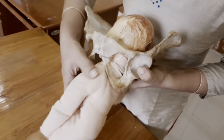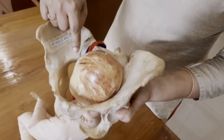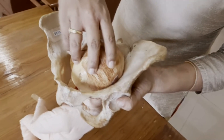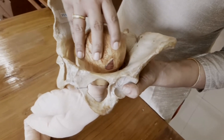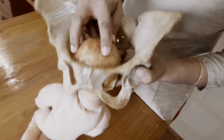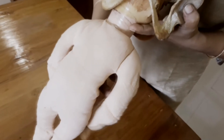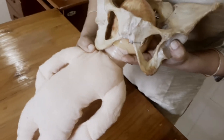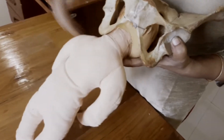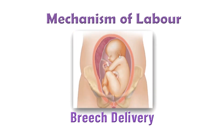The anterior shoulder comes under the symphysis pubis, the posterior shoulder is seen at the perineum, and the shoulders are born. Next is internal rotation of the head: the sagittal sutures are in the transverse diameter, the head enters the brim and rotates forward one-eighth of a circle, bringing the suboccipital region under the symphysis pubis. The sagittal sutures are now in the anterior-posterior diameter. External rotation of the body takes place, making the back the uppermost part. Birth of the head occurs by flexion — the chin, face, and sinciput sweep the perineum and the head is born in a flexed attitude.